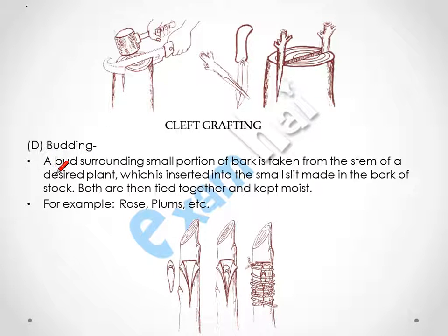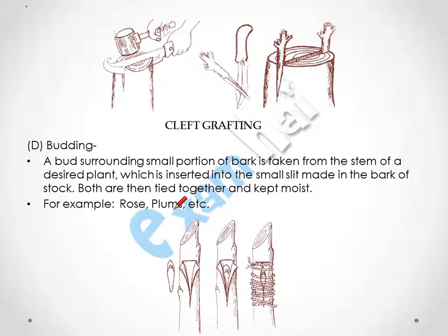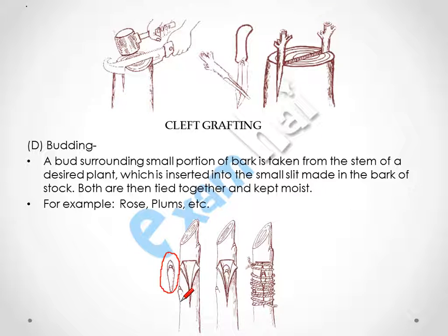Now budding — a bud surrounding a small portion of bark is taken from the stem of the desired plant and inserted into a small slit made in the bark of the stock. Both are tied together and kept moist. Examples include rose and plum. The bud portion from one plant is inserted into the slit made in another plant's bark — this is the stock, as it contains the root — tied well and kept moist with mud, after which it develops into a single plant.